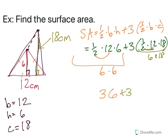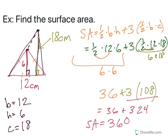6 times 18 is 108. Then I do 3 times 108, and I get 324. Remember, again, order of operations. So my surface area is 360 square centimeters.